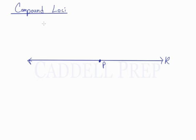And the compound loci might be the locus of points that are 4 inches from point P, and also 2 inches from line K.